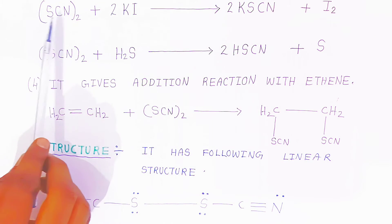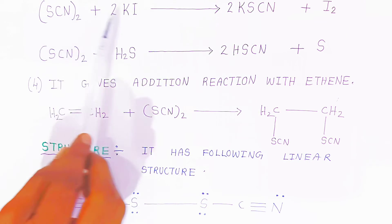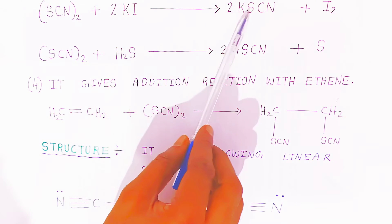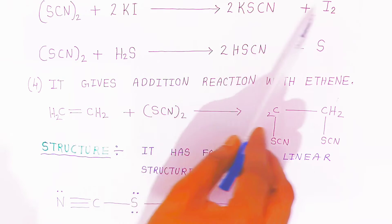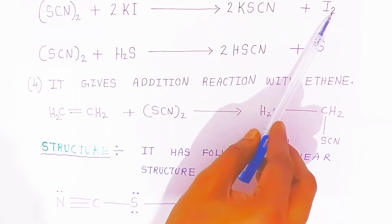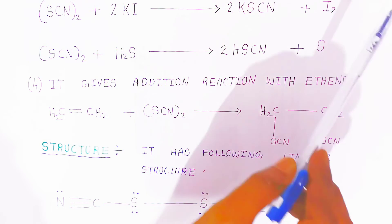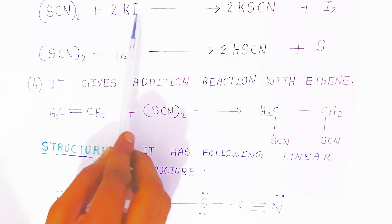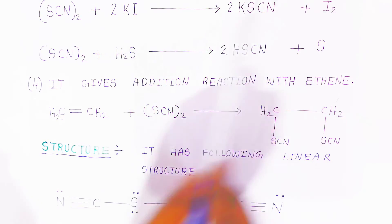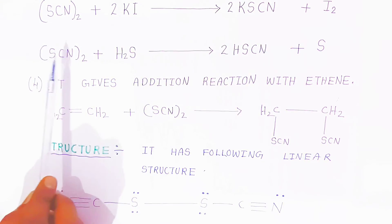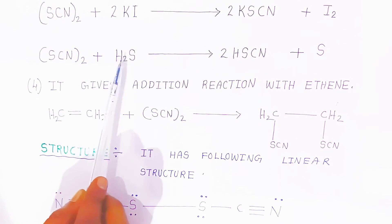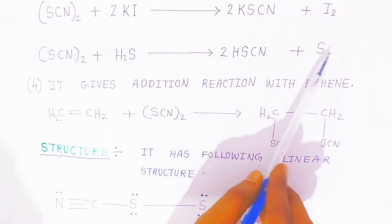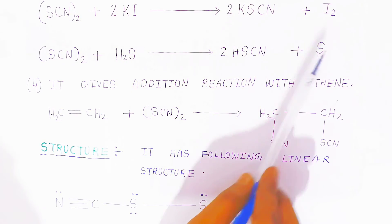Thiocyanogen reacts with potassium iodide giving potassium thiocyanide and iodine. This converts potassium iodide to iodine. Thiocyanogen also reacts with H₂S giving thiocyanic acid and sulfur.